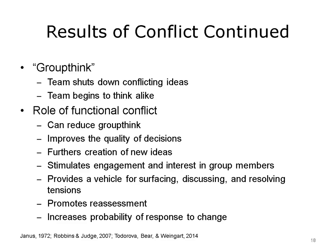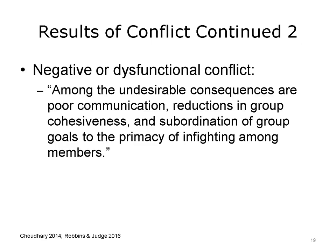According to Robbins and Judge, positive conflict 'is an antidote for groupthink. It doesn't allow the group to passively rubber-stamp decisions that may be based on weak assumptions, inadequate consideration of relevant alternatives, or other debilities. Conflict challenges the status quo, and therefore furthers the creation of new ideas, promotes reassessment of group goals and activities, and increases the probability that the group will respond to change.' Whereas positive conflict can lead to improved group decision-making and functioning, negative conflict can lead to impaired group decision-making and inhibit communication, reduce cohesiveness, and result in dysfunctional infighting.